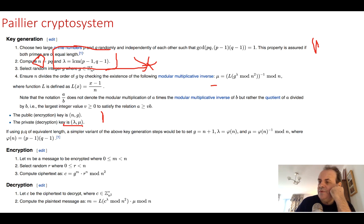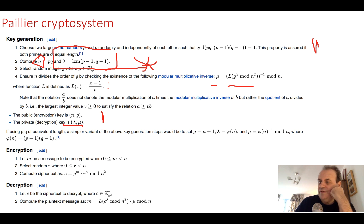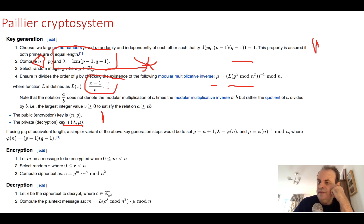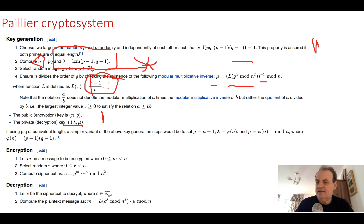If we pick the wrong g value, the cipher won't work correctly. Next, we calculate mu using the L function: take the value, subtract 1, and divide by n. Specifically, we compute g to the power of lambda mod n squared, apply the L function, and then take the inverse mod n. After that, we should have our public key and private key.